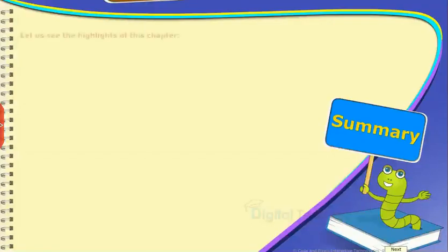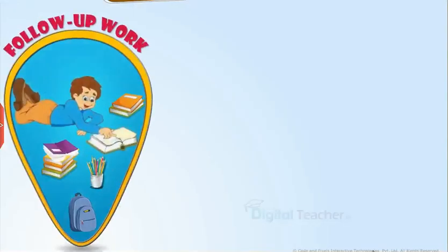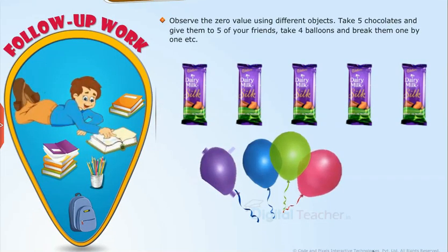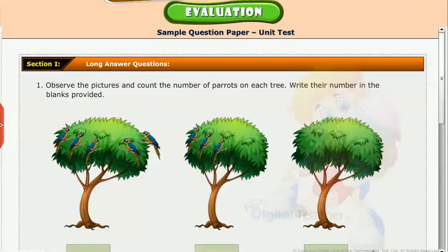Summary: Let us see the highlights of this chapter. Zero means nothing. We use the number zero to show that there is nothing. Counting of numbers and pictures helps identify the zero value. Follow-up work: Take up the following activities. Observe the zero value using different objects — take five chocolates and give them to five of your friends, or take four balloons and break them one by one. Test your understanding of the chapter by taking the mock unit test.